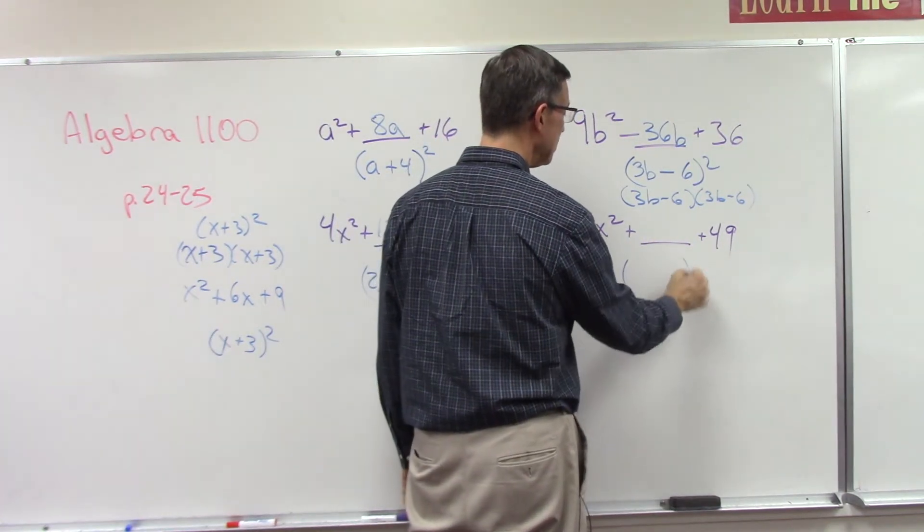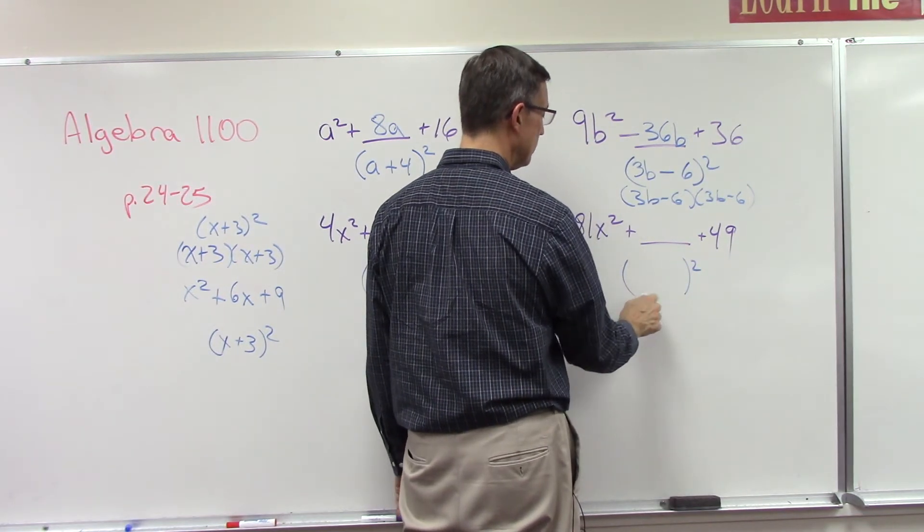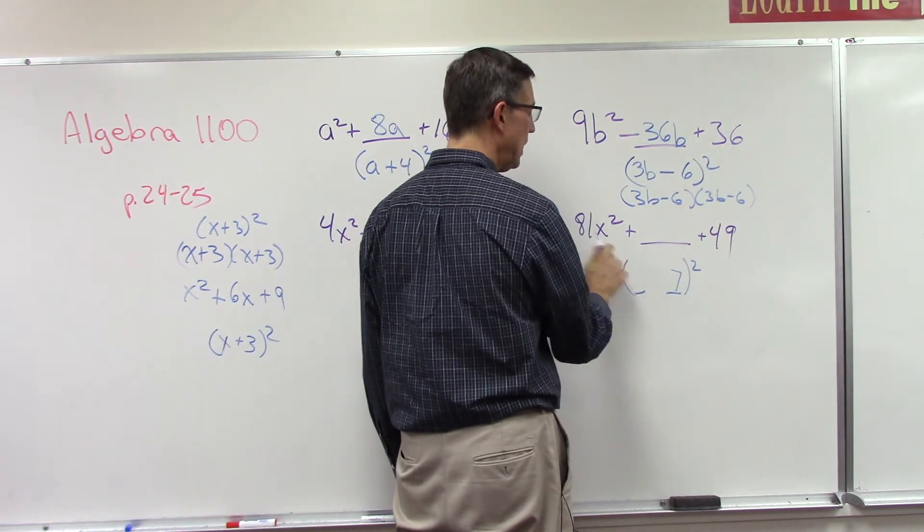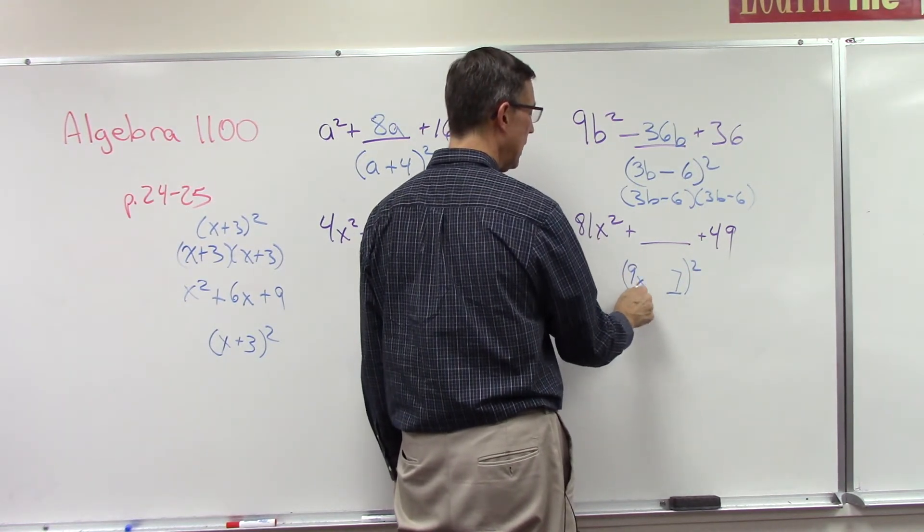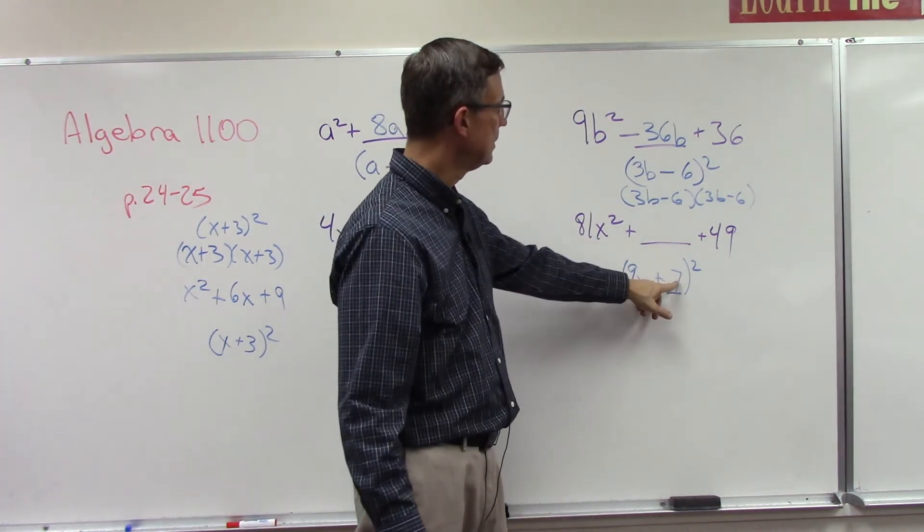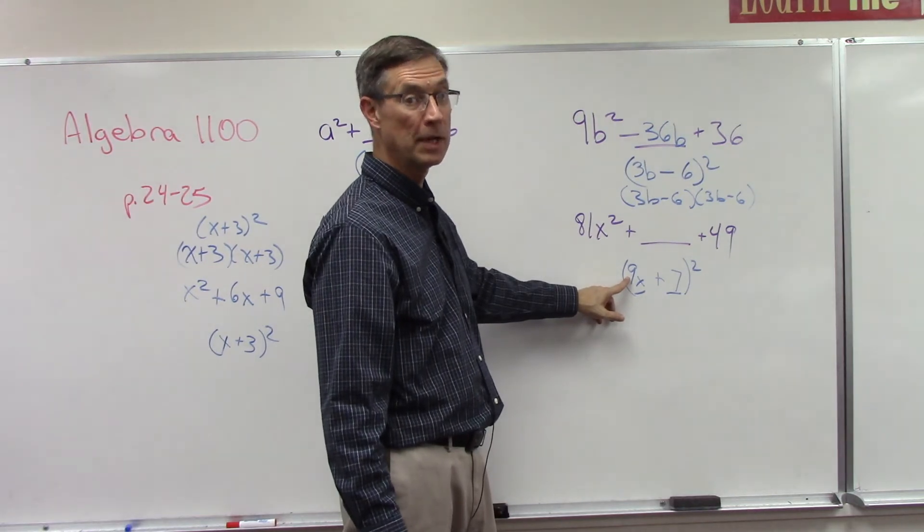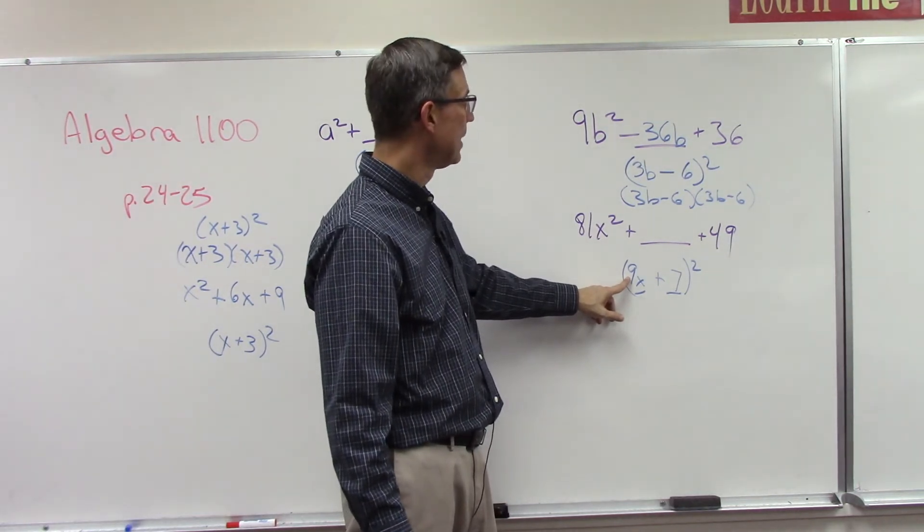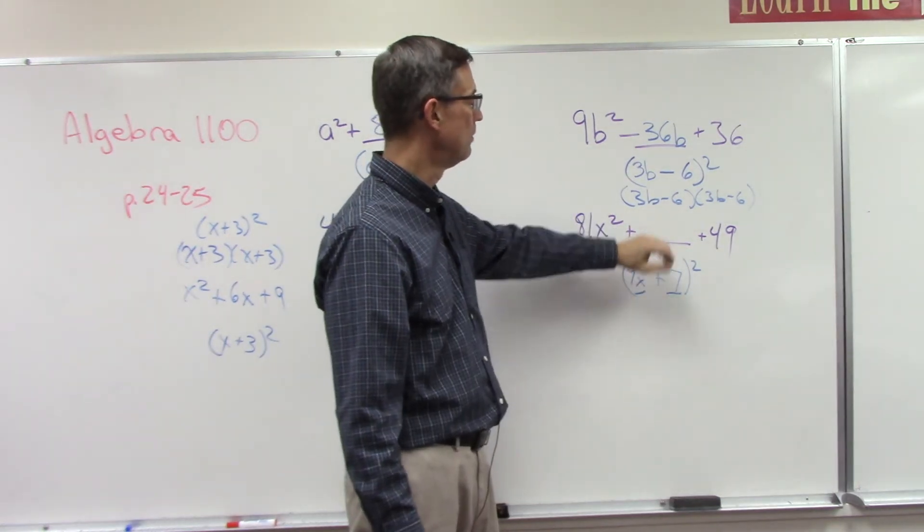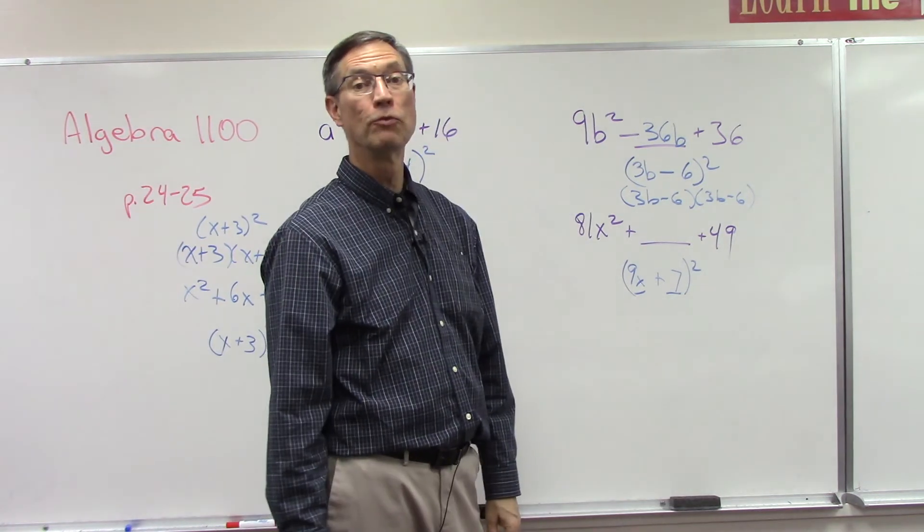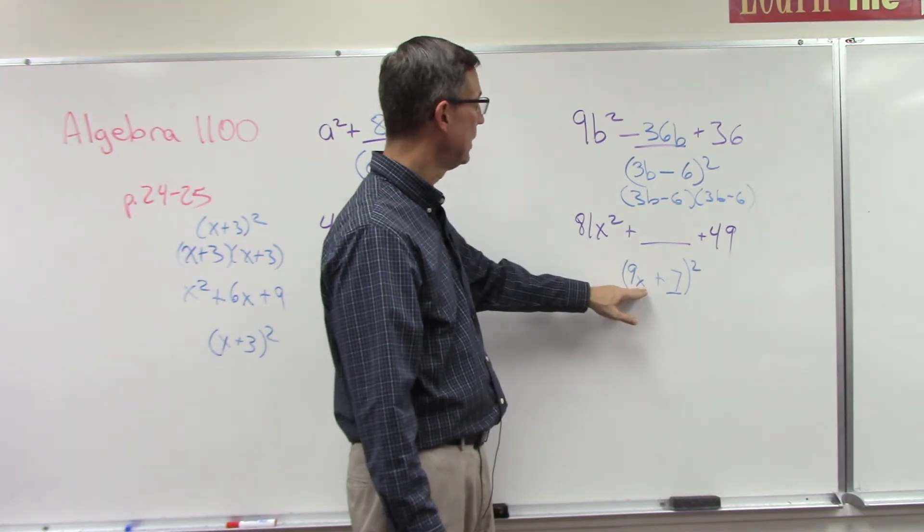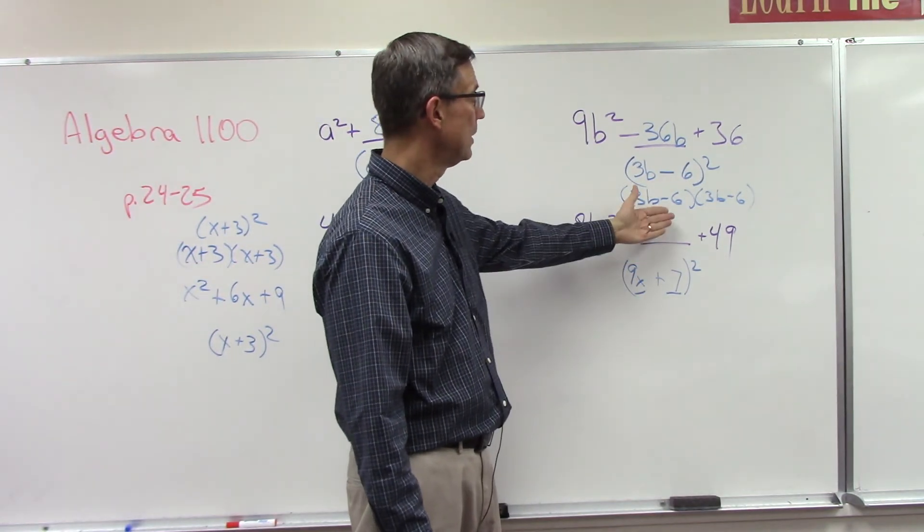All right, we're trying to figure out what the middle term would be here, but to do that we need to figure out what the two square root terms are. Square root of 49 is 7, square root of 81x² is 9x. This is plus, so this will be plus. Now we're going to take these two, multiply them together, and then double that, times 2, and that will give you the middle term. I'm not going to do that one for you—it looks complicated, but it's just following the pattern. Multiply these two together and double it, and that becomes your middle term.